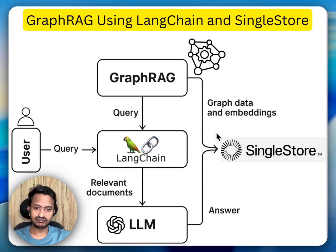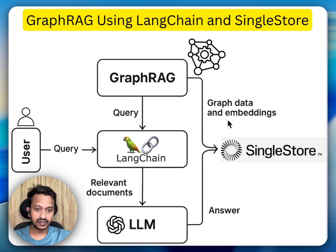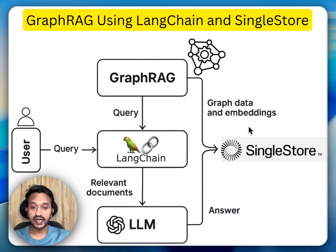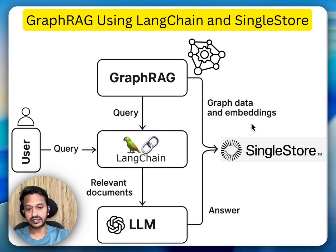Here is the tech stack I'm going to use in this tutorial. We're going to use SingleStore as our vector database and optional GraphStore. LangChain, as you all know, is an open source LLM framework — we're going to use that to manage our graph RAG pipeline and orchestrate tools. We're going to use NetworkX to create an in-memory knowledge graph, and OpenAI's model to generate the final answer from retrieved context. Those are the four things we're going to use, and that's the architecture we're going to follow.